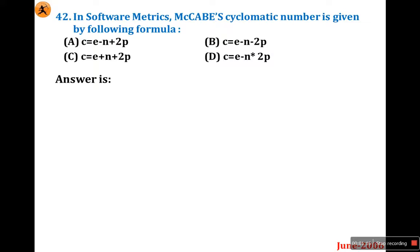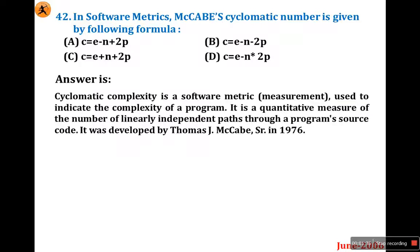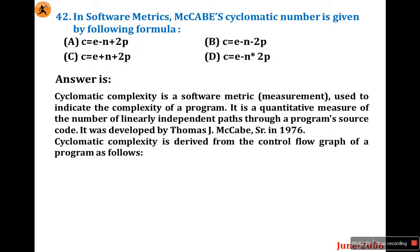Question number 42: In software metrics, McCabe's cyclomatic number is given by a formula. There are 4 formulas and almost all look the same, with only plus and minus differences. Cyclomatic complexity is a quantitative measurement of the number of linearly independent paths through a program's source code. It was developed by Thomas McCabe in 1976 and is derived from the control flow graph of a program.